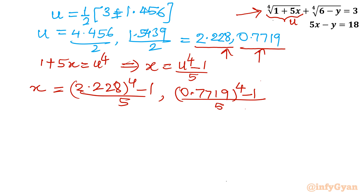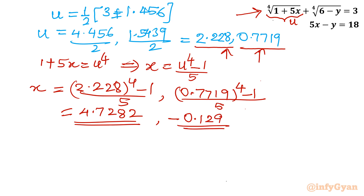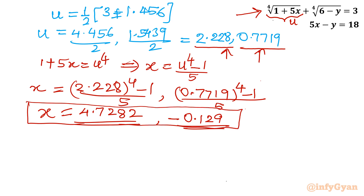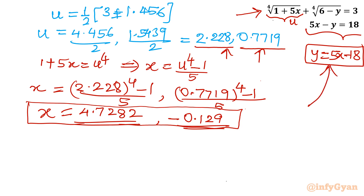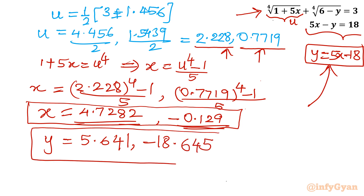Computing the first value gives x ≈ 4.7282, and the second gives x ≈ -0.129. Now for y, from the second equation y equals 5x minus 18. Substituting x ≈ 4.7282 gives y ≈ 5.641, and substituting x ≈ -0.129 gives y ≈ -18.645. These are our final answers for x and y.